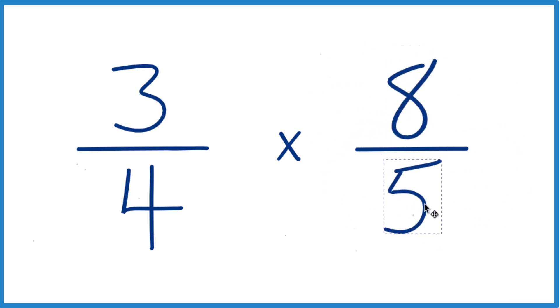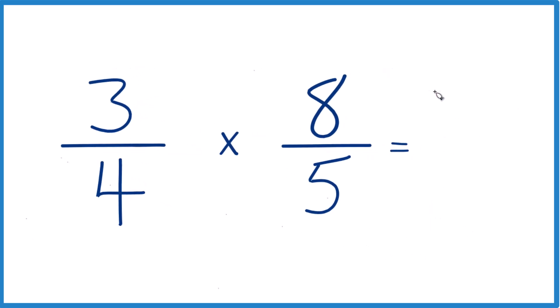So now it's a lot easier because when we multiply fractions, we multiply the numerators, 3 times 8, that equals 24. And then we multiply the denominators, 4 times 5 is 20, so we end up with 24 twentieths.